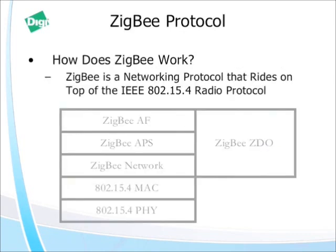So let's talk about ZigBee. You can see here on the bottom of this diagram that 802.15.4 actually forms the foundational layer of the ZigBee stack. ZigBee itself is really just a routing layer and an application services layer that's built on top of 802.15.4.